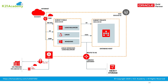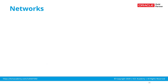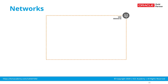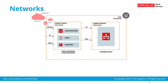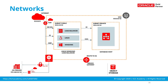We'll look at a diagram covering the networking components you should learn in OCI, such as VCN, subnet, security list, internet gateway, dynamic routing gateway, and different other types of gateways.